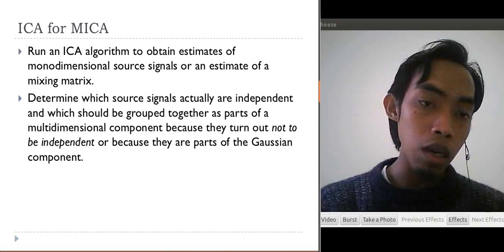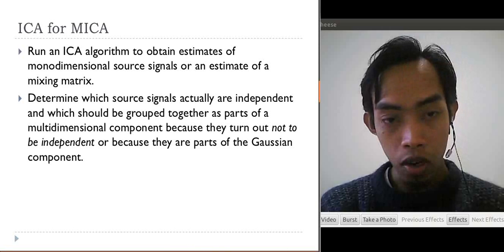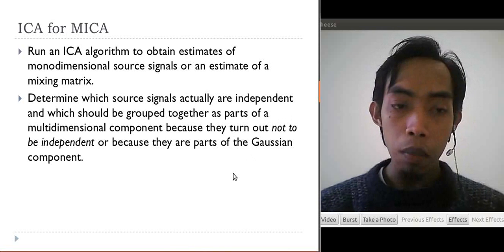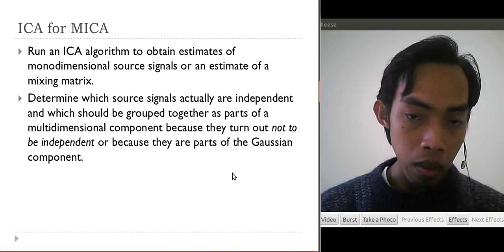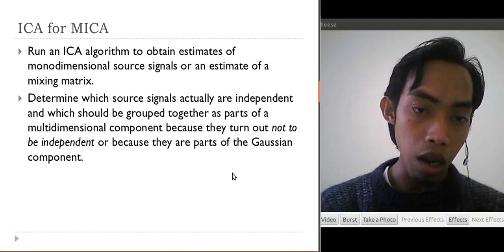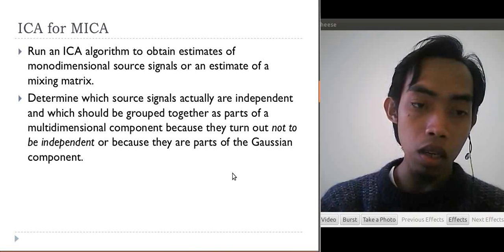The second step is to determine which source signals actually are independent and which should be grouped together as parts of multidimensional components because they turn out not to be independent or because they are part of the Gaussian component.